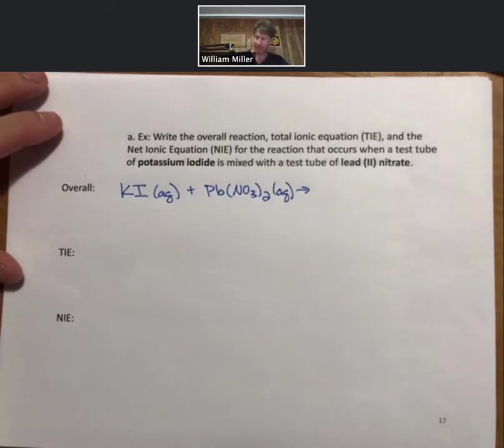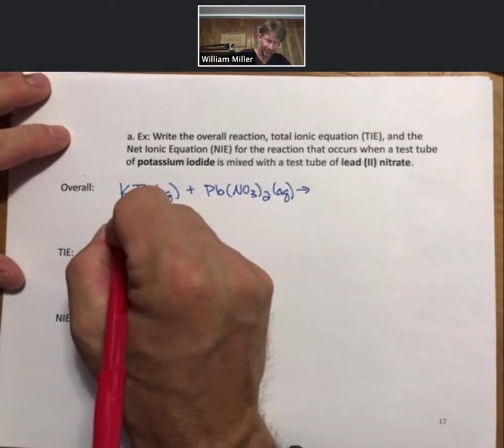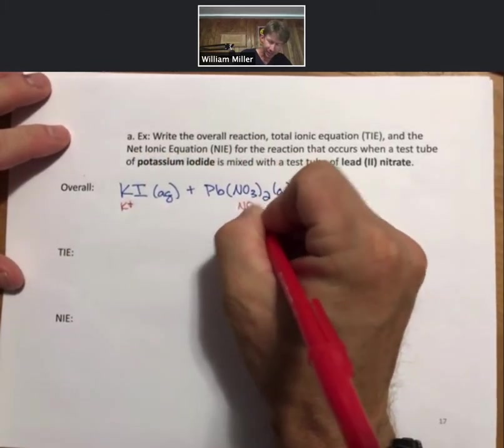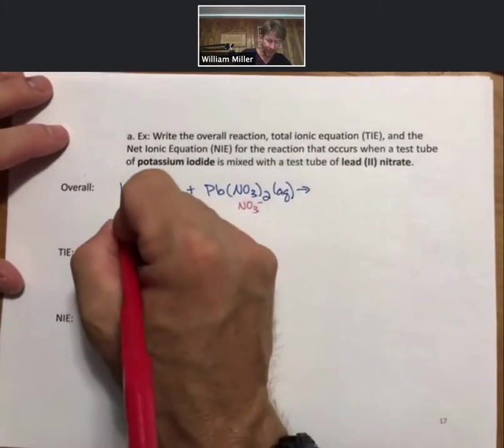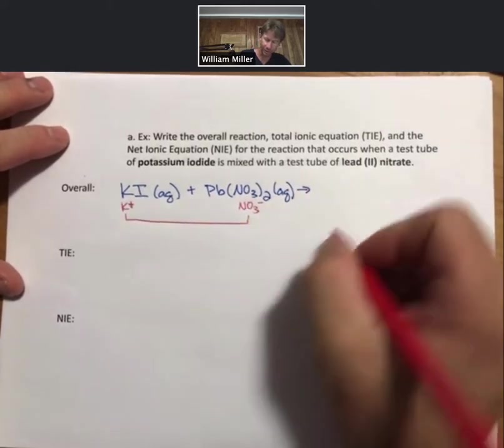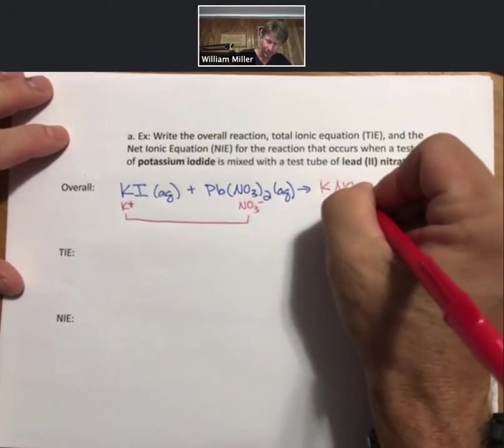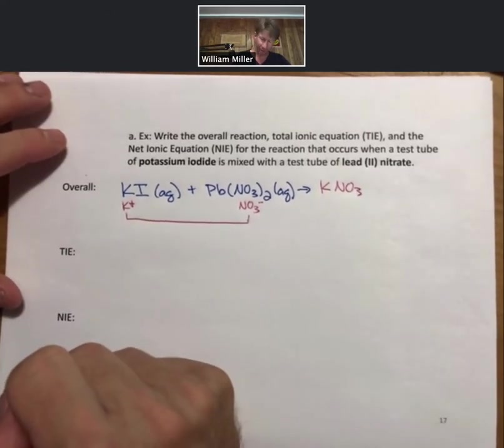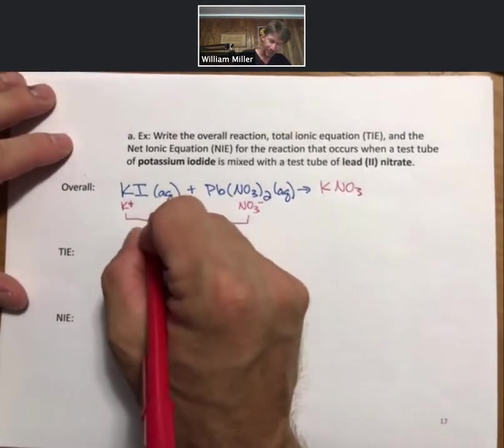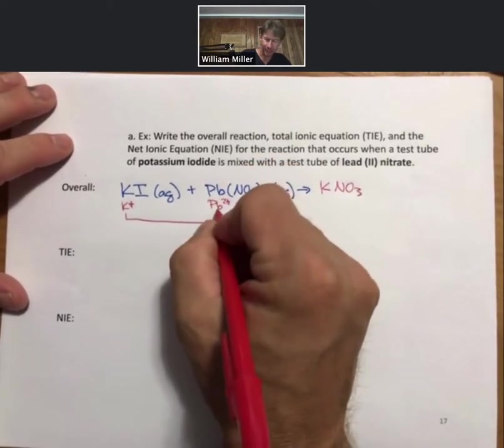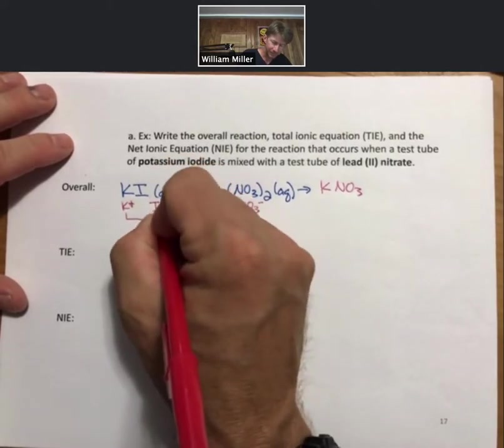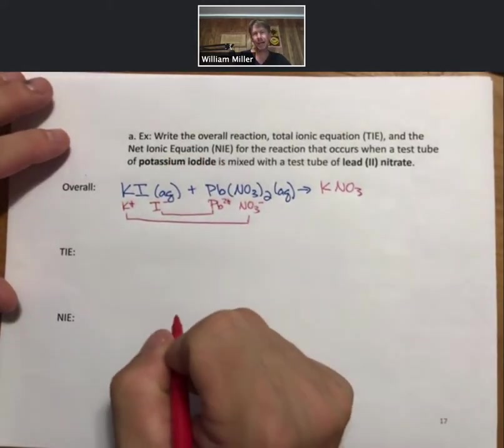Now, the way that these work is that the positive ion, which is the K plus, and the negative ion from the other reactant, they are going to team up to form one of the products. In this case, potassium nitrate. The other product is going to take the other two ions, the positive or cation, lead two plus, and iodide.